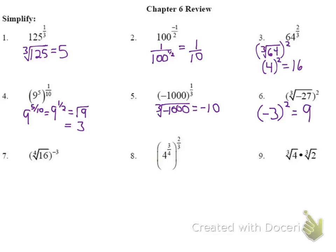Number 7: we first find the fourth root of 16. Since 16 is 2 × 2 × 2 × 2, the fourth root of 16 is 2, and that's raised to the negative 1/3. We make the exponent positive by writing 1 over 2 to the 3rd. 2 cubed is 8, so our answer is 1/8.